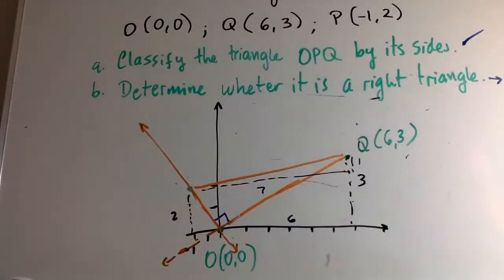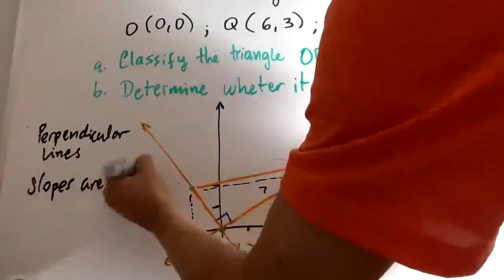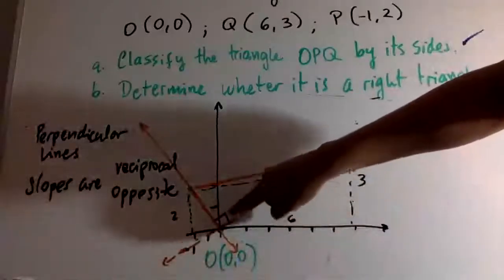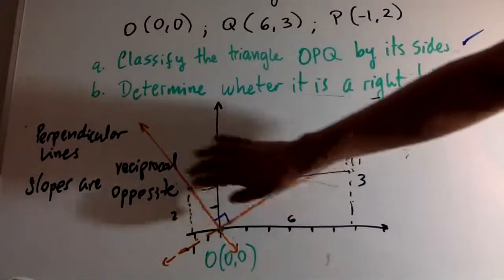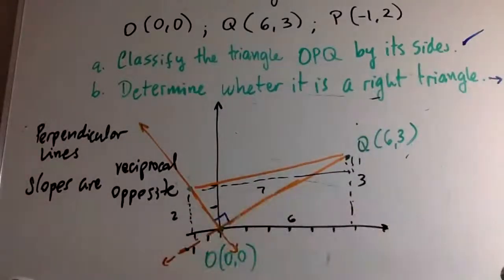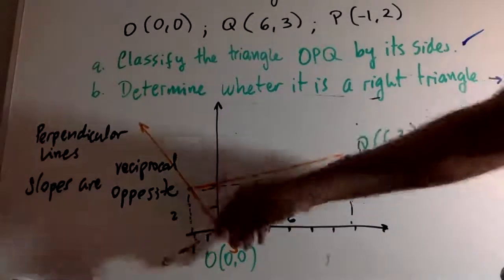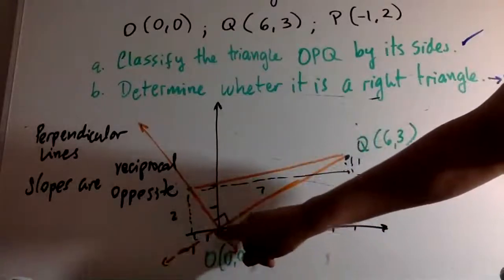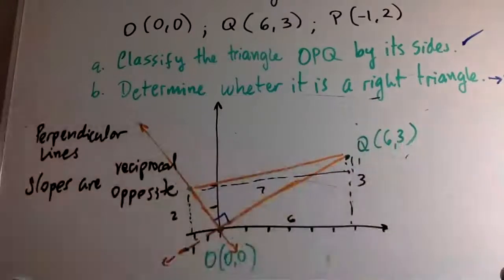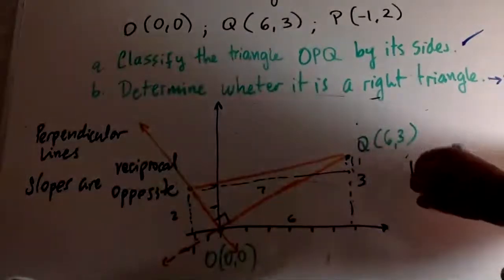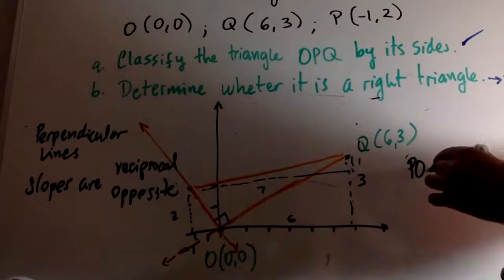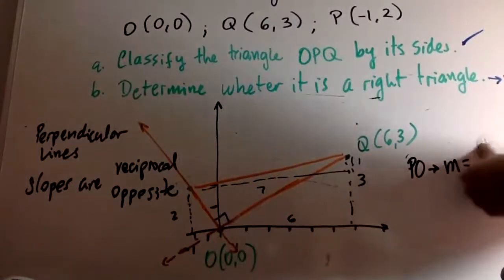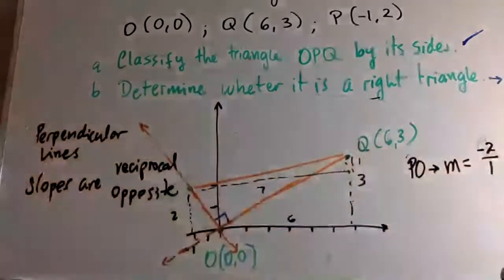We extend the sides to lines. From our earlier chapter on parallel and perpendicular lines, we know that perpendicular lines have slopes that are opposite reciprocals. The slope of line PO: going from P to O you go one to the right and two down, so the slope of PO is -2/1, which is -2.